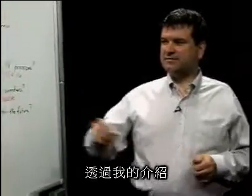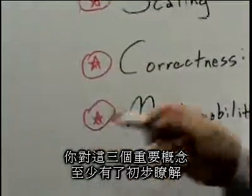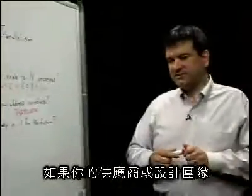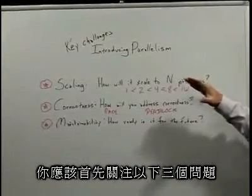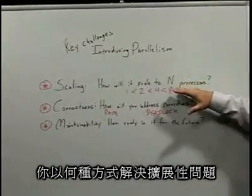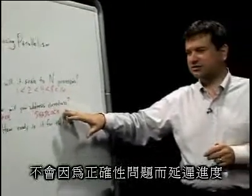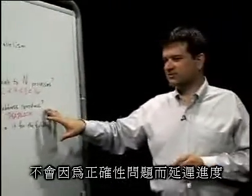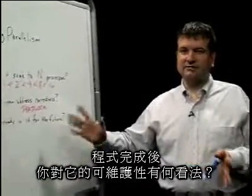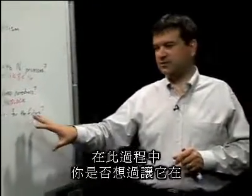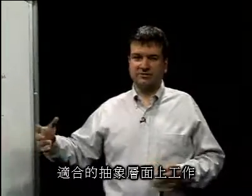So, these are three key concepts that I've given you at least a flavor for. If you have a supplier or a design team working on adding parallelism, these are the three issues I would focus on first: What's your approach to give yourself scaling? What's your approach to make sure that correctness issues don't frustrate you and stall your project? And what do you have in mind for the maintainability of your application — have you approached it with an idea of operating at the proper level of abstraction?